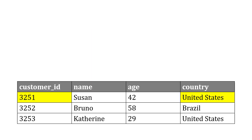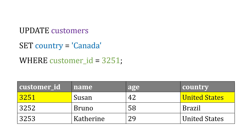Let's take a look at an example. Say we've got a customers table, and for customer 3251 we want to change their country from the United States to Canada. We can write: UPDATE customers SET country equal to Canada — that's the new value — WHERE the customer ID is 3251.